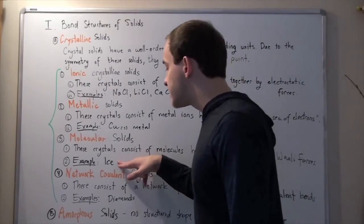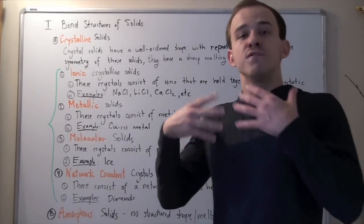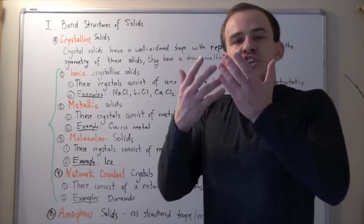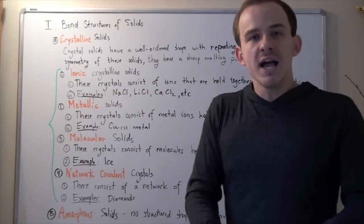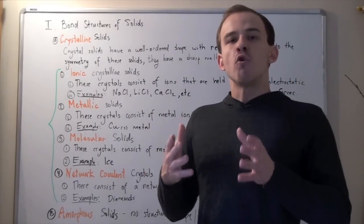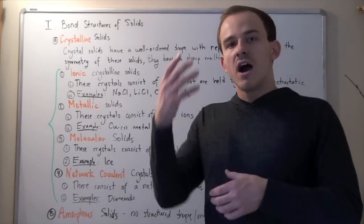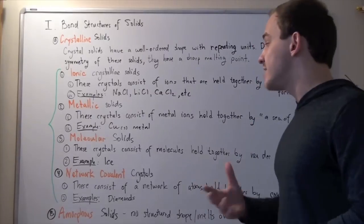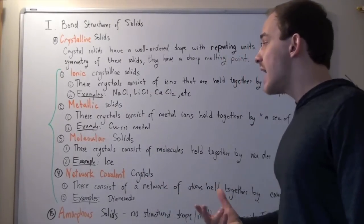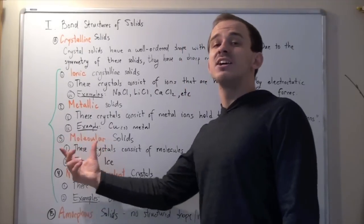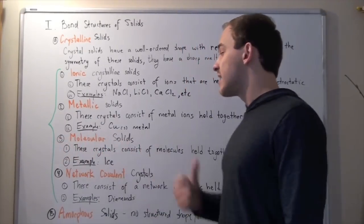Examples include ice. When you take energy away from water and form ice, the water molecules form a very structured formation. This creates what we know as ice, which is called molecular crystals or molecular solids.